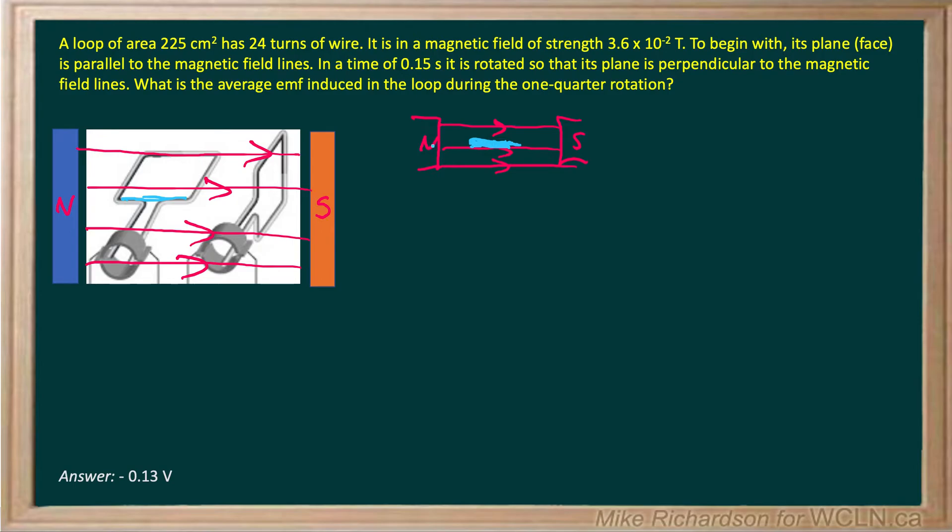If the loop is flat, then none of the field lines pass through the center of that loop. Therefore, it's not creating any flux. So my initial flux, which is B times A - and we have to be capturing field lines. Since I'm not capturing any field lines, my initial flux is zero Webers.